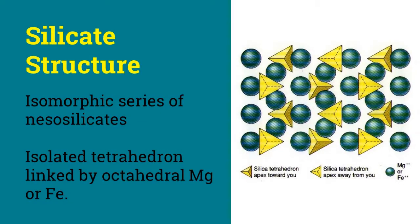Olivine is a nesosilicate in which isolated silica tetrahedrons are linked by divalent cations of either magnesium or iron.